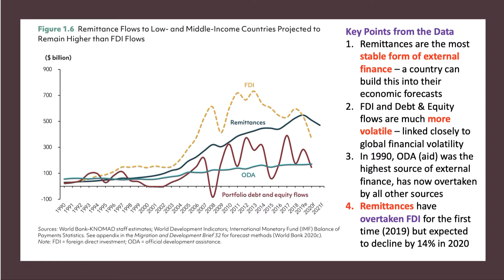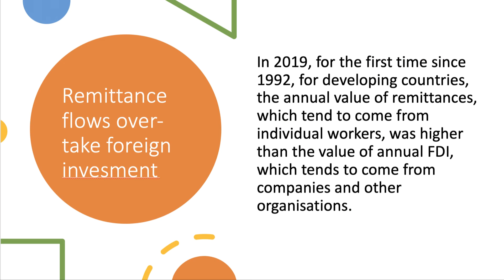If we go back 30 years, aid was the biggest source of external finance, but that's now been overtaken by all of the other sources. Crucially, remittances have overtaken FDI for the first time, although they are expected to fall by 14% in the wake of the pandemic. Remittances tend to be in the form of cash and come from individual workers sending money back home, whereas FDI tends to come from companies and other organisations.